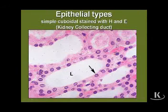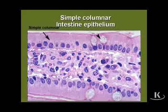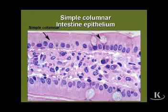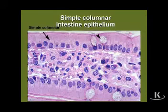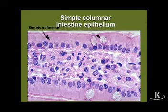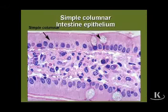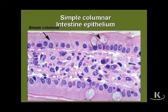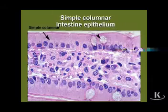This next example is a simple columnar epithelium, highly characteristic of the small and large intestine. Unlike the kidney's simple cuboidal epithelium, this epithelium has many different cell types, two of which are illustrated here. Much of the villus comprising the small intestine is lined by absorptive simple columnar epithelium with microvilli, or a brush border, shown at the arrow. At the arrowhead are examples of unicellular goblet mucus-secreting cells that also characterize this epithelium.